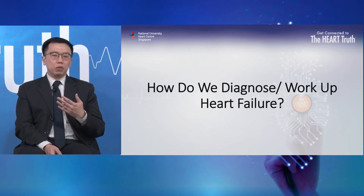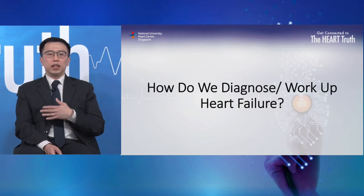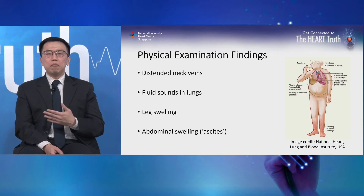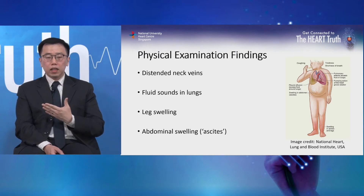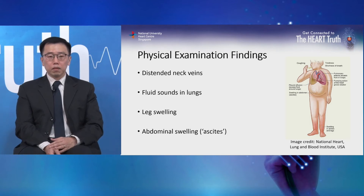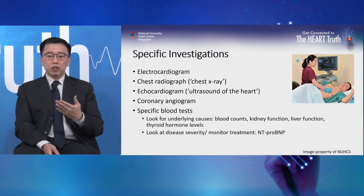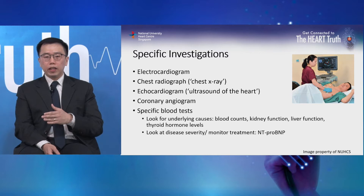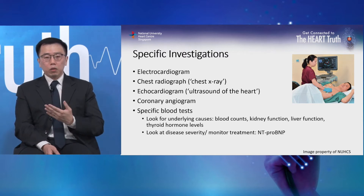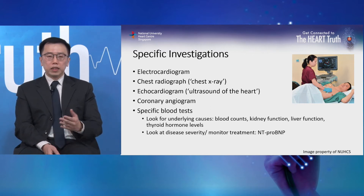How do we diagnose heart failure? It requires in-depth history taking and physical examination. Examination findings include distended neck veins, abnormal lung sounds, leg swelling, and abdominal water retention — known medically as ascites. After suspecting heart failure, specific investigations are chosen by the cardiologist for each patient. Common tests include an electrocardiogram, a chest x-ray, an echocardiogram, and in some situations a coronary angiogram. Specific blood tests are also important to help improve outcomes.